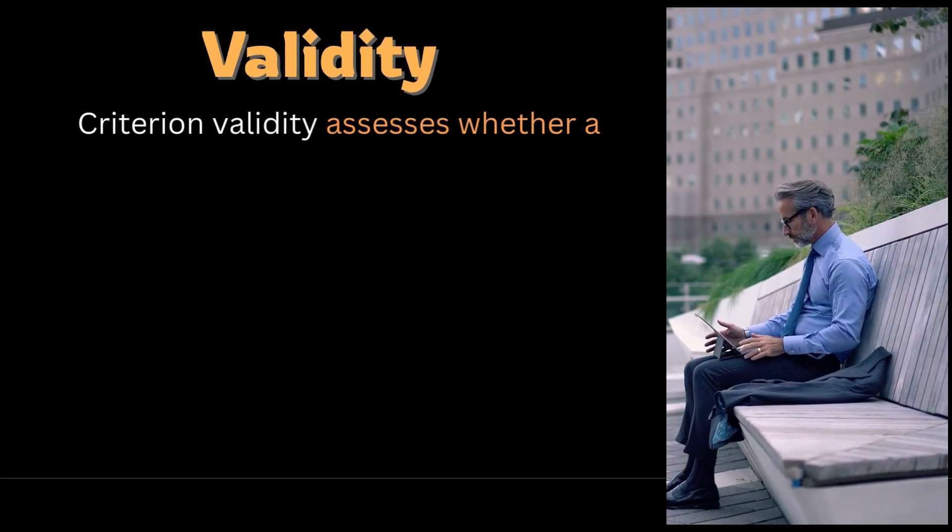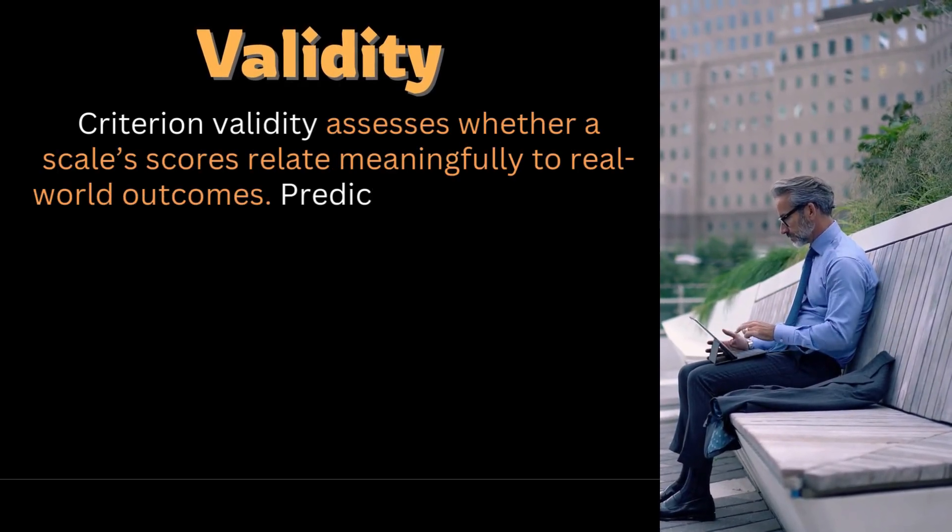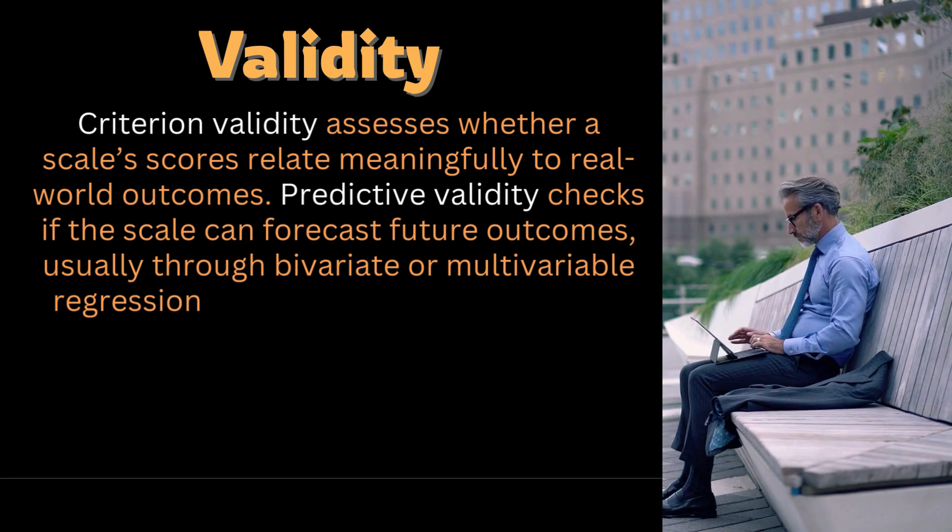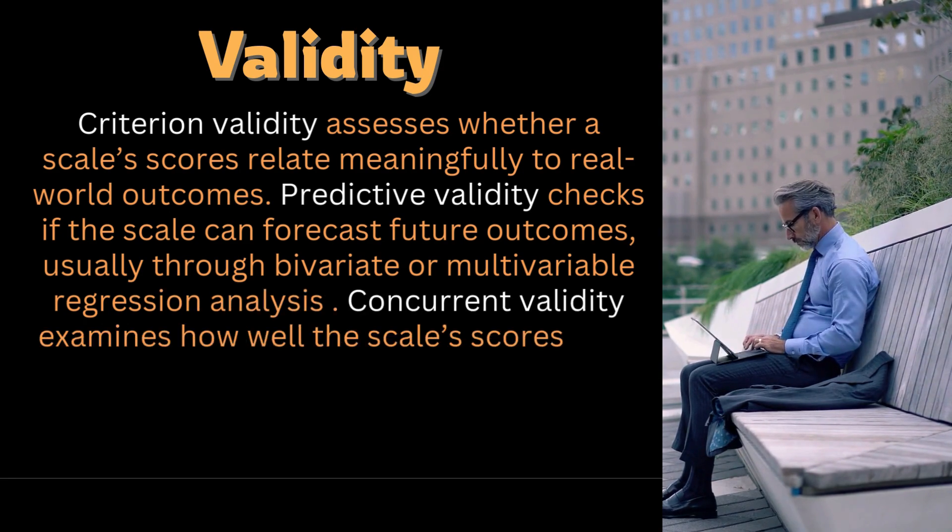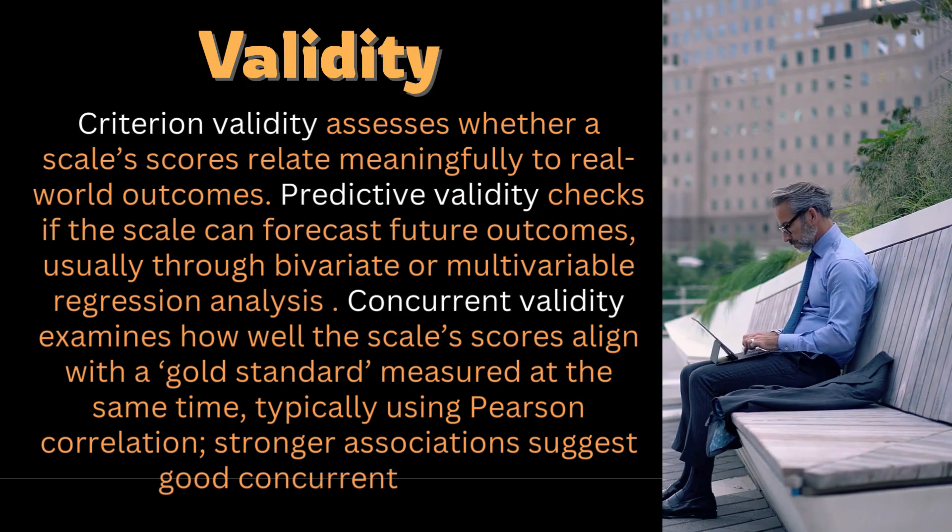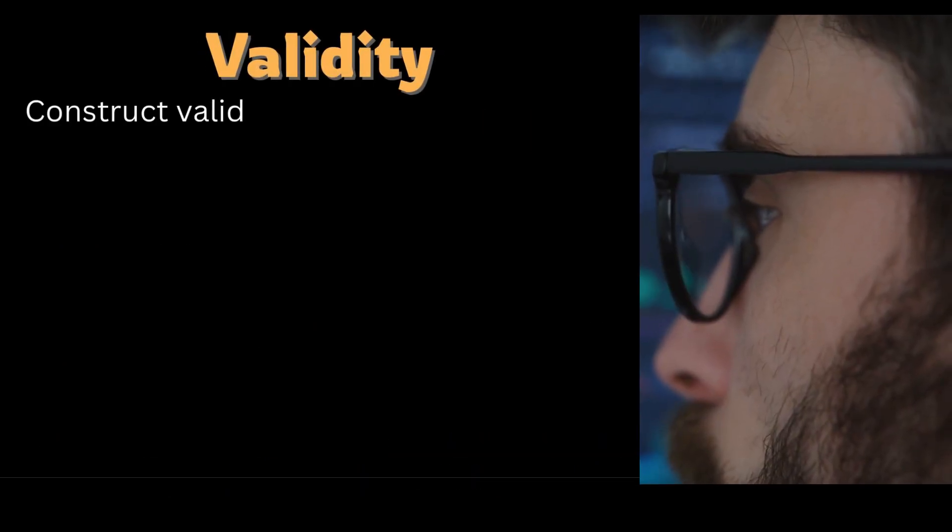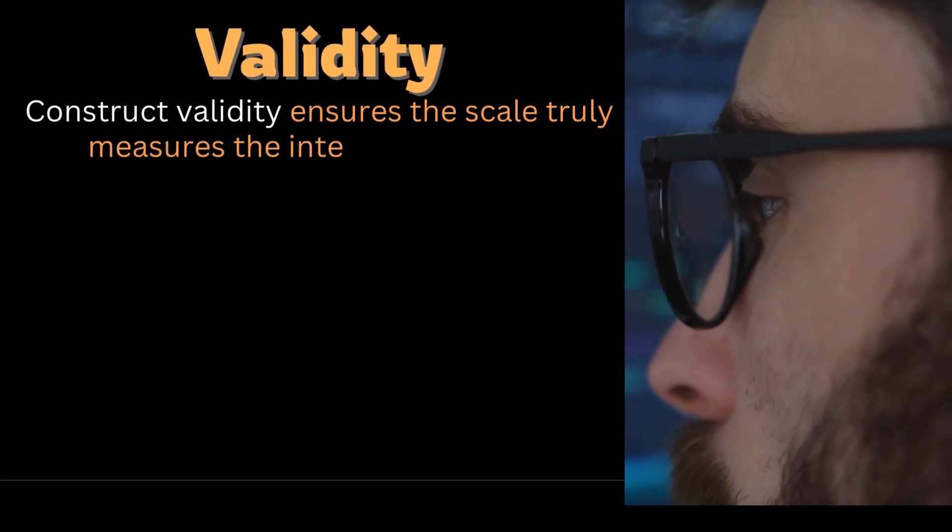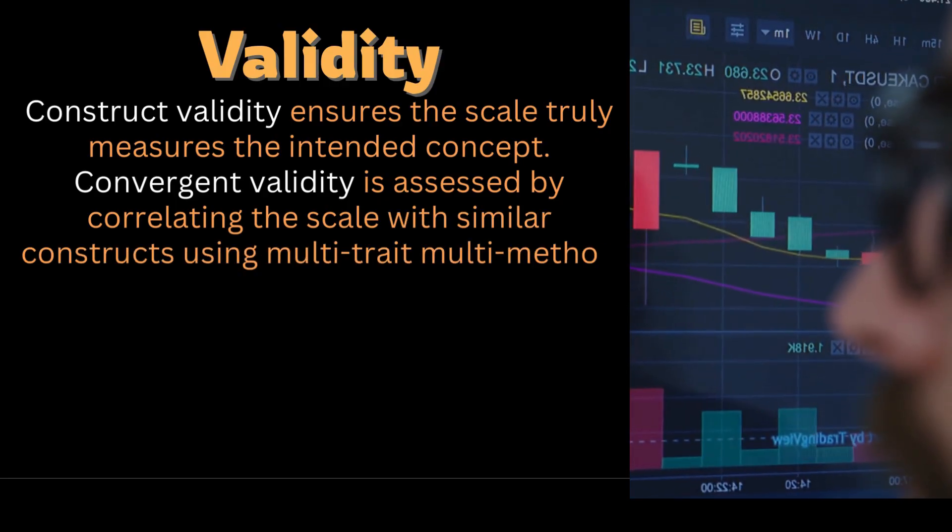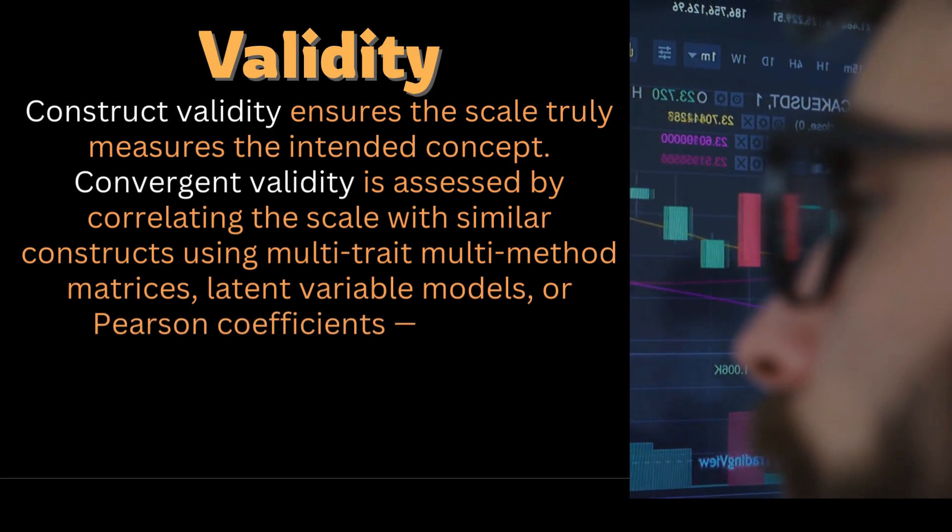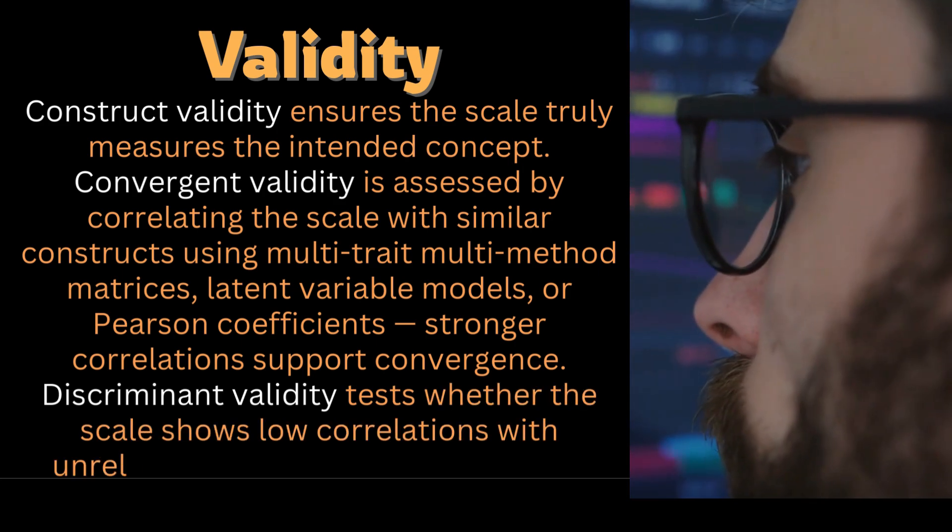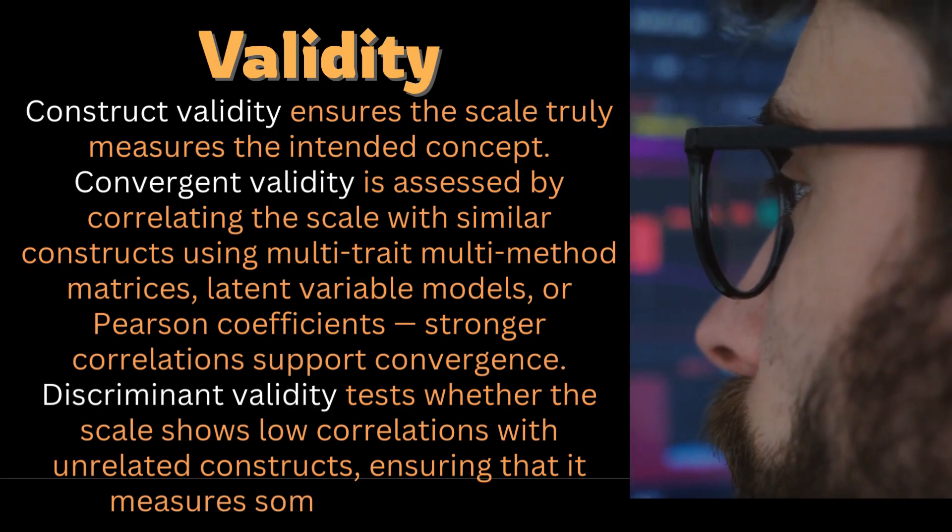Criterion validity assesses whether a scale's scores relate meaningfully to real-world outcomes. Predictive validity checks if the scale can forecast future outcomes, usually through bivariate or multivariate regression analysis. Concurrent validity examines how well the scale's scores align with a gold standard measured at the same time, typically using Pearson correlation. Stronger associations suggest good concurrent validity. Construct validity ensures the scale truly measures the intended concept. Convergent validity is assessed by correlating the scale with similar constructs using multi-trait multi-method matrices, latent variable models, or Pearson coefficients. Stronger correlations suggest convergence. Discriminant validity tests whether the scale shows low correlations with unrelated constructs, ensuring that it measures something distinct.